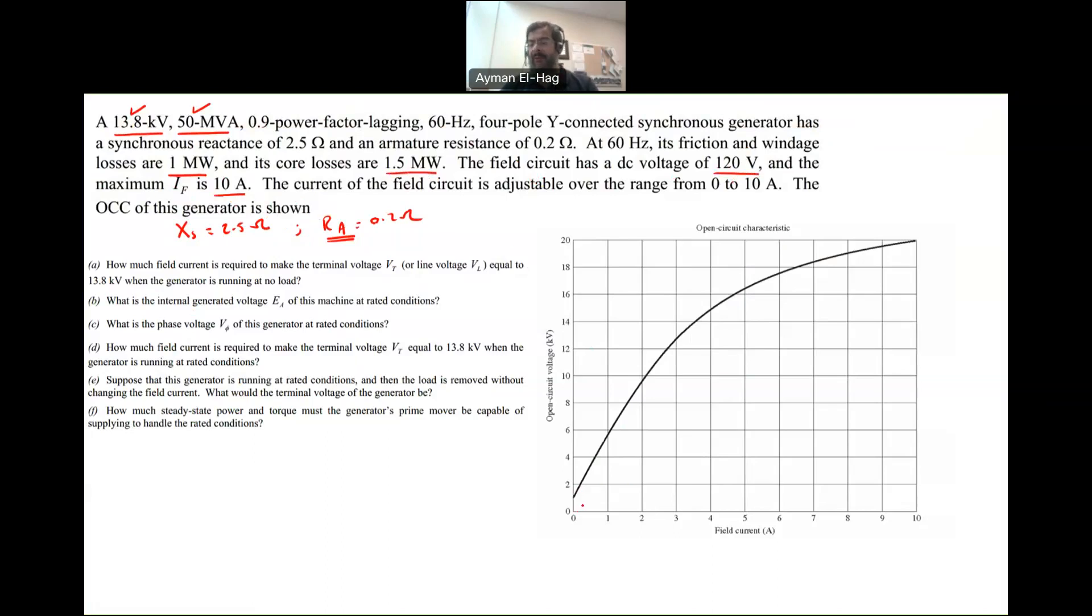Here you can see the characteristic of the terminal voltage at no load versus the field current. This voltage is line-to-line V terminal, which at no load condition is basically Ea. Ea is controlled by K omega flux - the internal generated voltage. The flux comes from If. We cannot measure Ea, only terminal voltage. At no load conditions, both Ea and Vt are equal.